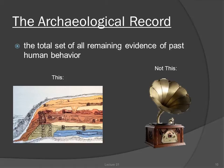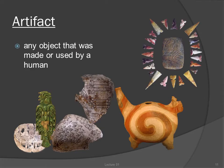There are four basic types of evidence that make up the archaeological record. The first and most basic is the artifact — any object that was made or used by a human, usually referring specifically to portable objects.